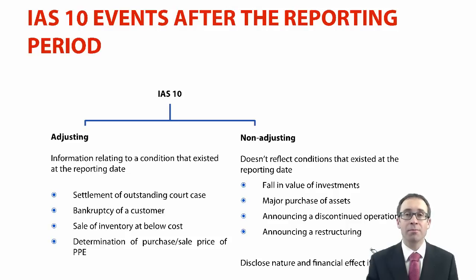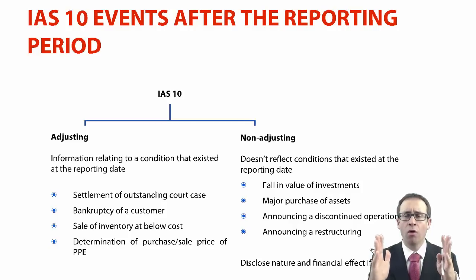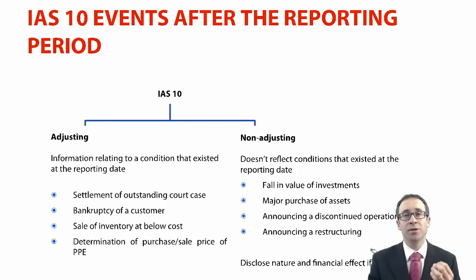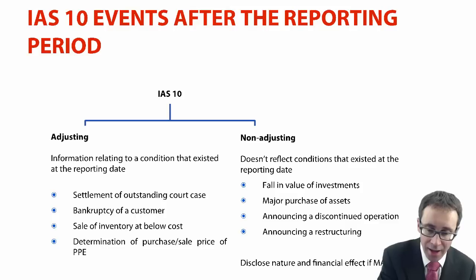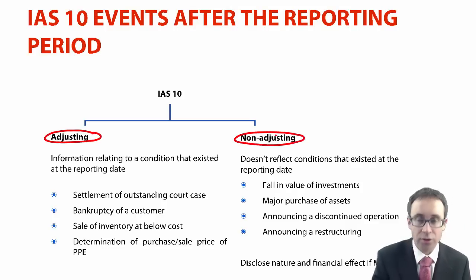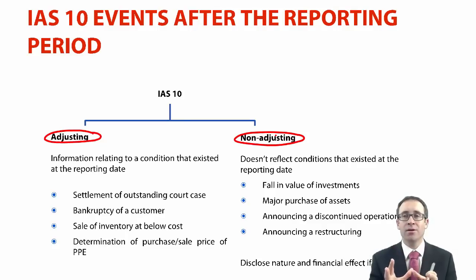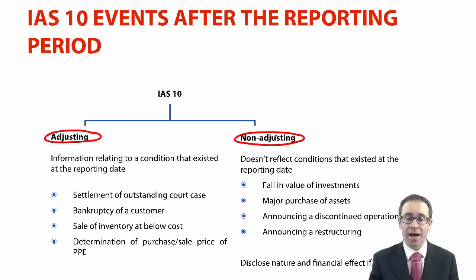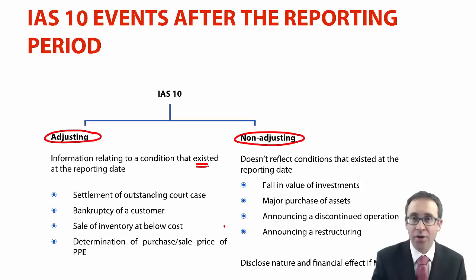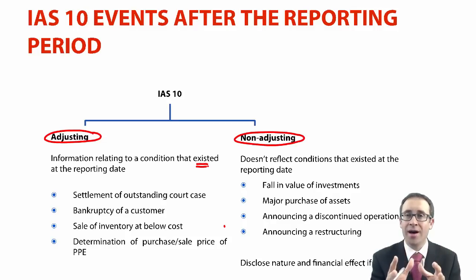What we're looking at is events after the reporting period, covered by IAS 10. There shouldn't be anything too technically demanding in the exam. All we're looking at is an event that happens between the reporting date and when the accounts are authorised for issue. If things happen in between, we assess the item to see whether it is an adjusting event or a non-adjusting event. The key criteria is that an adjusting event gives you additional information about a condition that existed at the reporting date. If that condition did not exist at the reporting date, then whatever happens subsequently is a non-adjusting event.